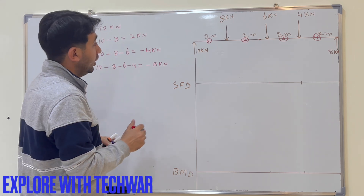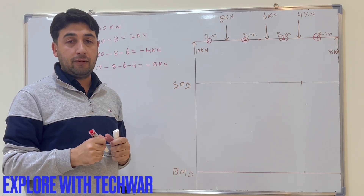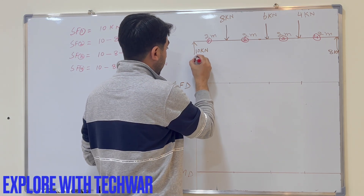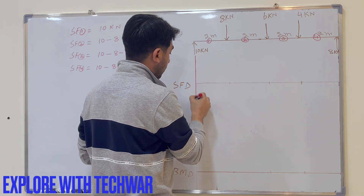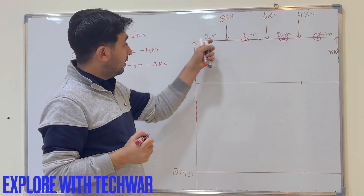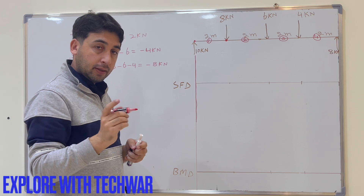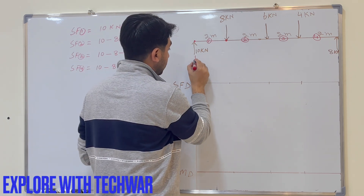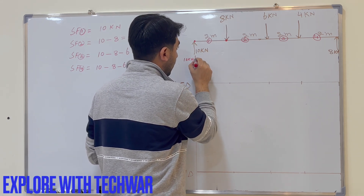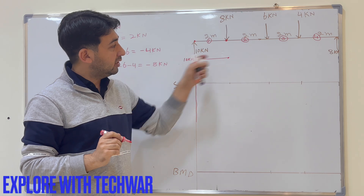Now we draw the shear force diagram. On the y-axis we have shear force magnitude and on the x-axis we have the length of the beam. From the left support to the first force, the shear force is 10 kN, so we go straight up to 10 and maintain that value across that entire region.